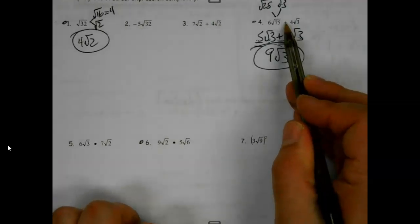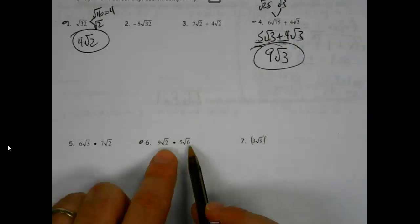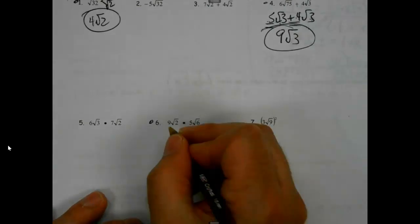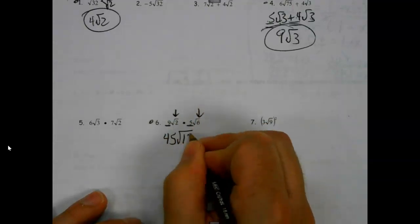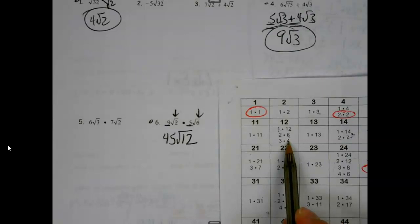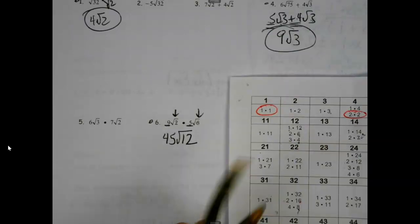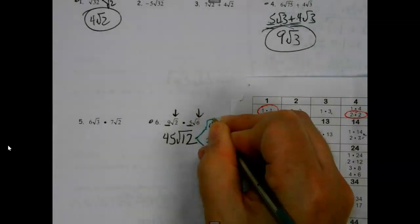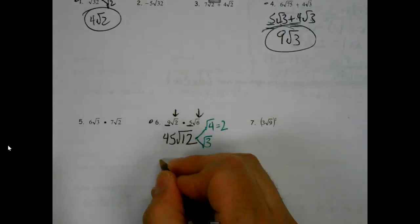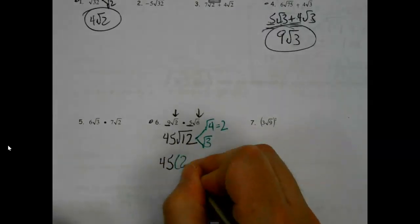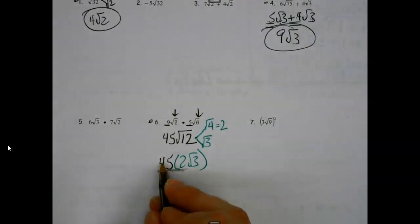Making note again of the difference: when adding, we can only put them together if the radicals are the same. If we're multiplying, we don't have to do that - we can multiply the numbers in front and the numbers underneath. Now if this were a quiz question you'd have half credit already, showing me you understand the idea. But if I pull out 12, I notice there's a perfect square that's a factor - do 3 and 4. The square root of 4 is 2, so 45 is still here, but then we get 2 times the square root of 3, and we multiply those together.